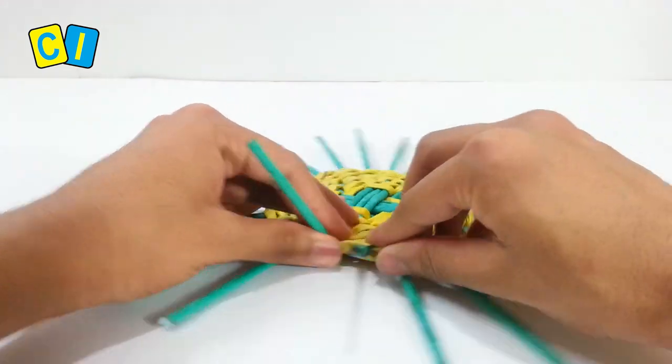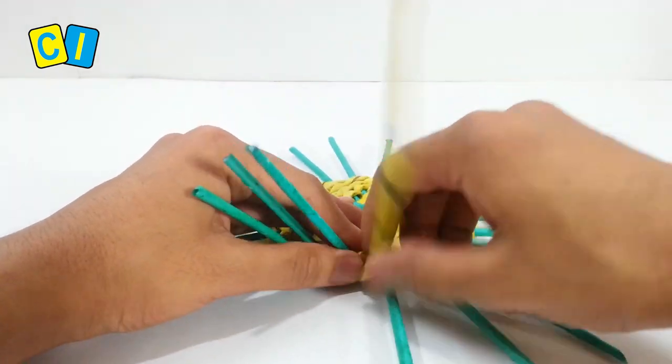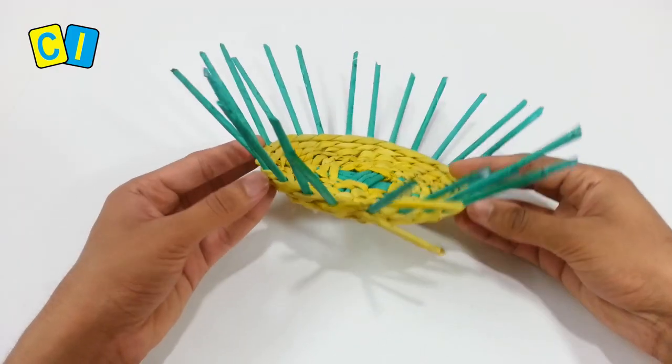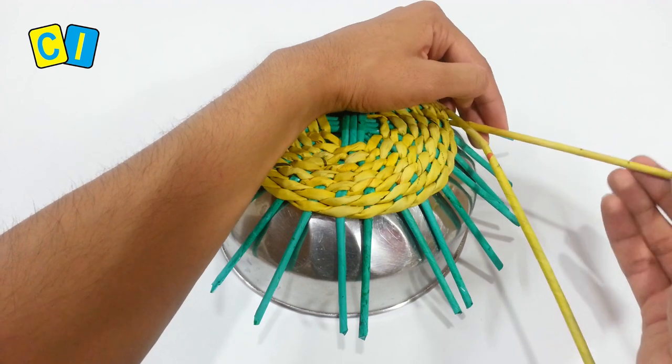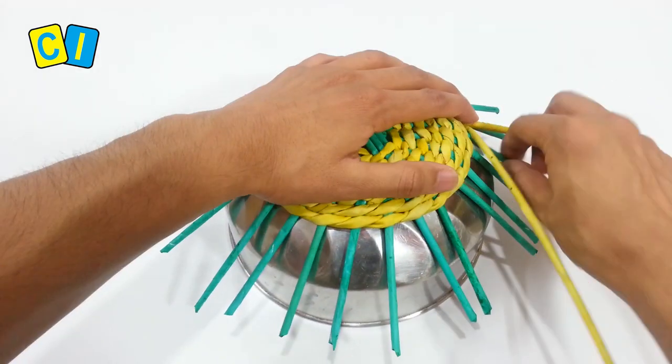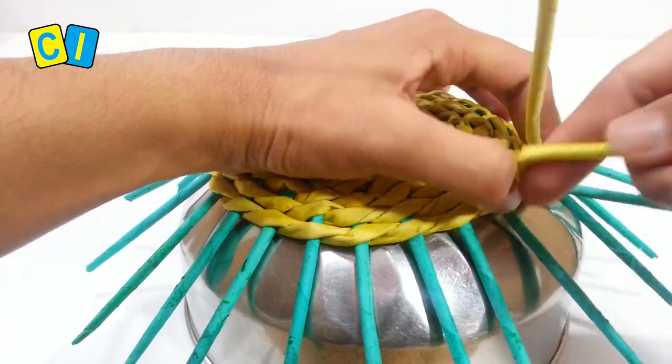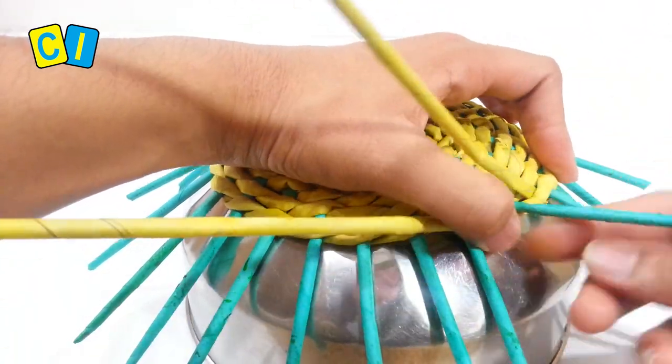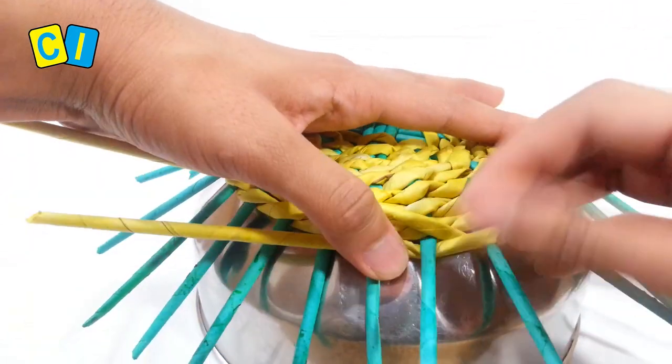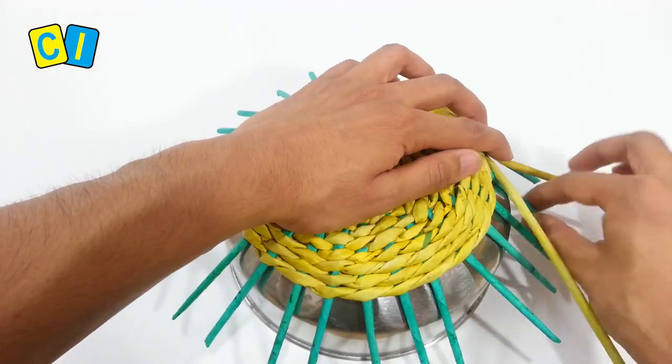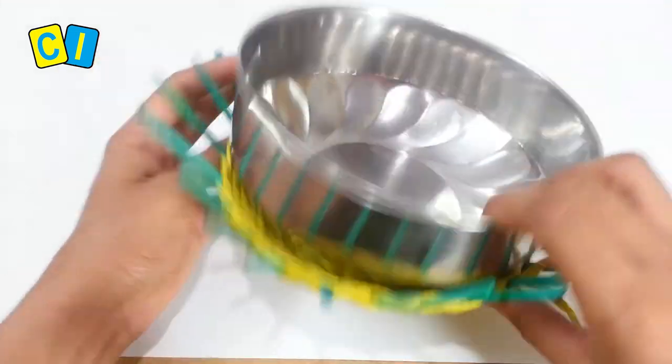Bend the tubes upward and weave two rows. The basket has started to curve. Place it on the container. Hold at the center and weave along the surface, and continue weaving.